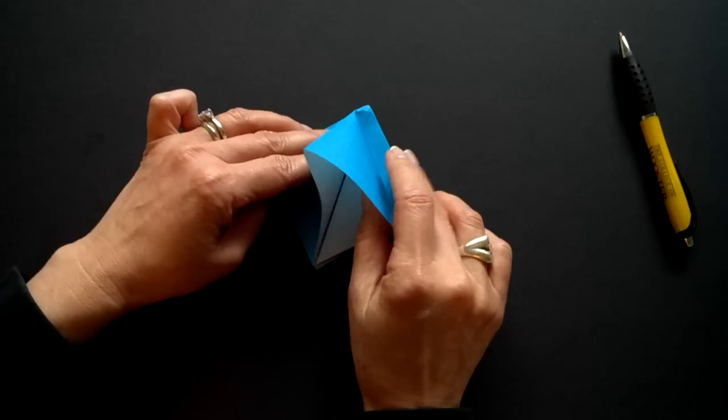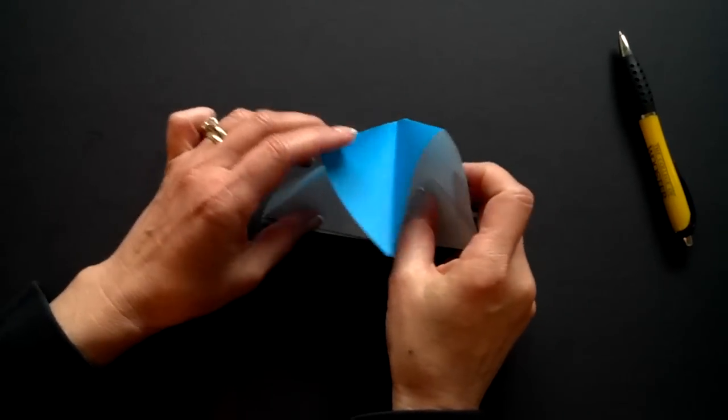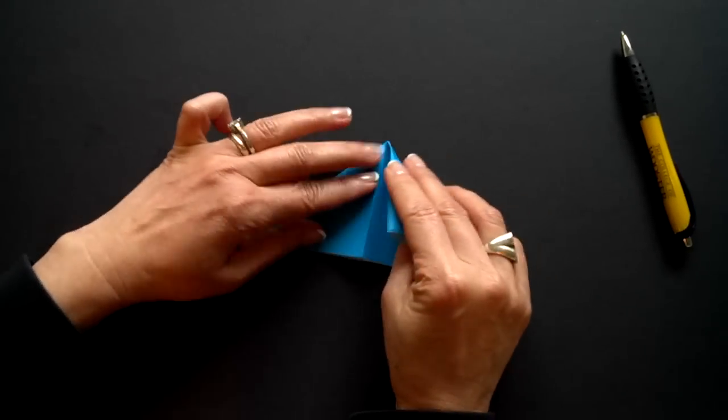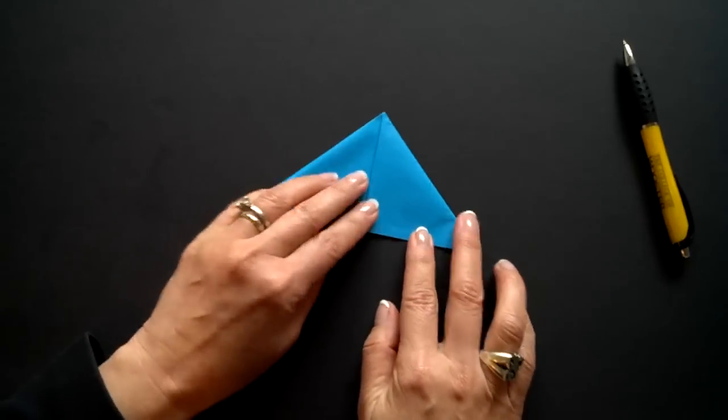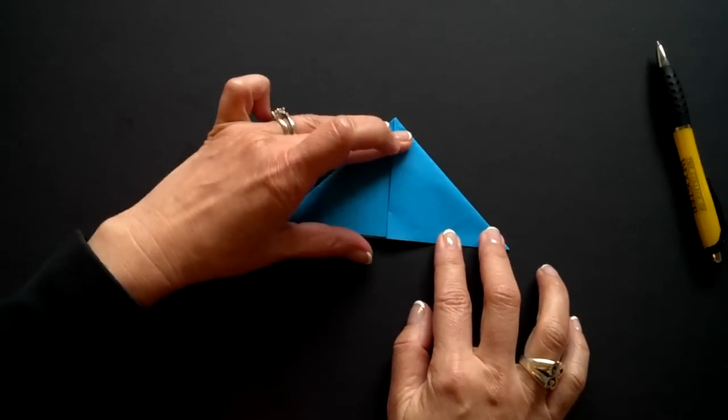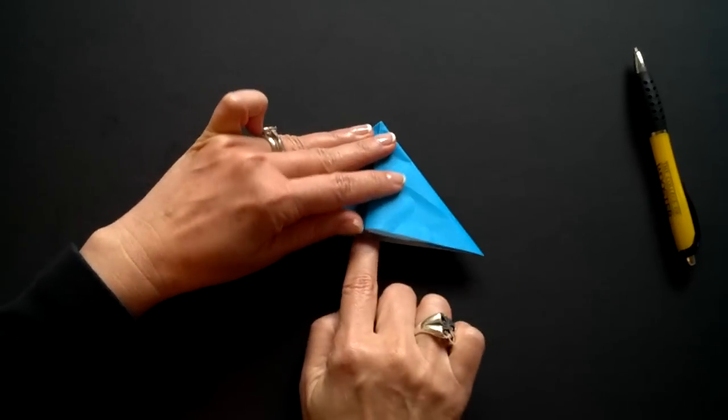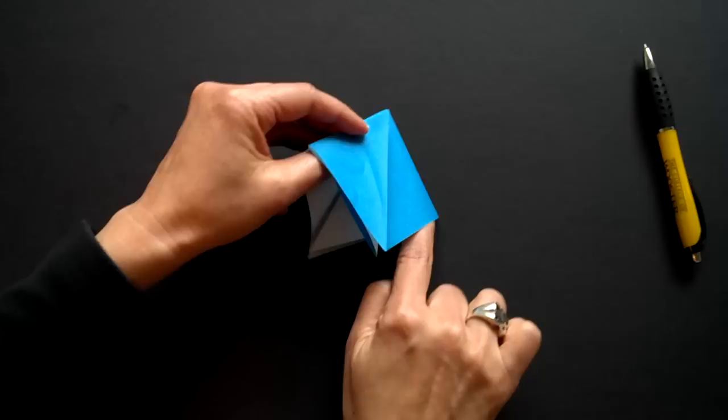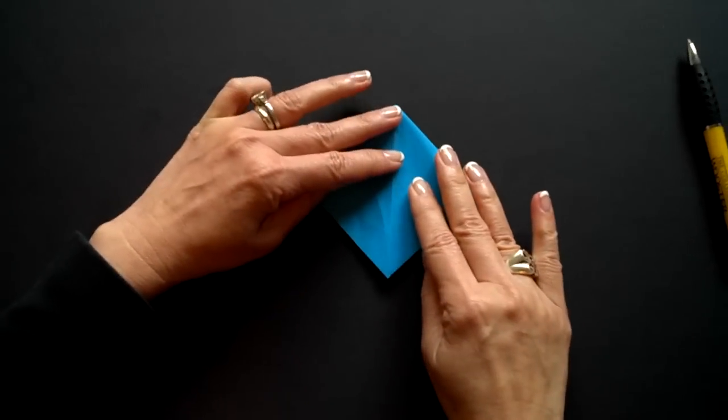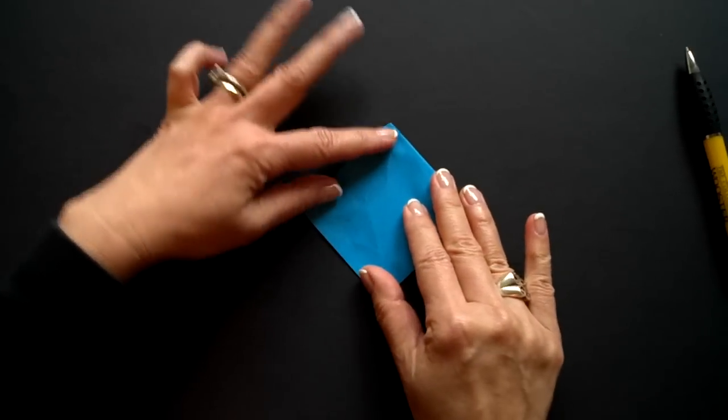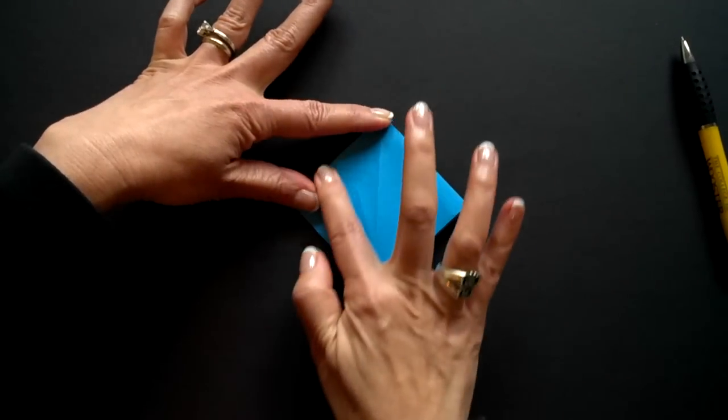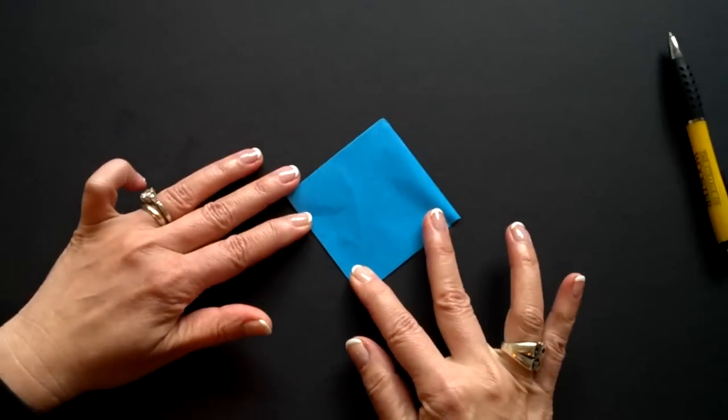And we're going to make this back into a square. One more time. We were like this. We're going to open this triangle and make it a square.